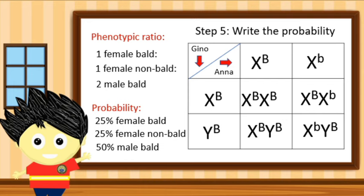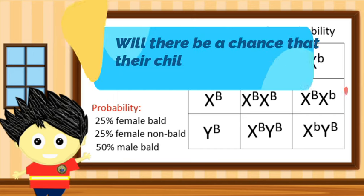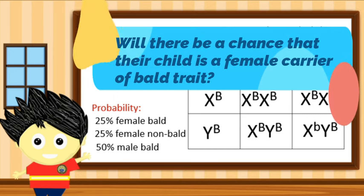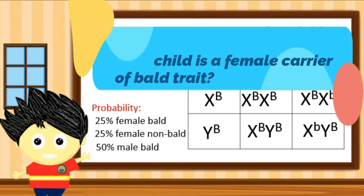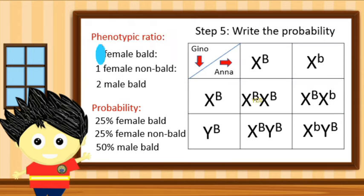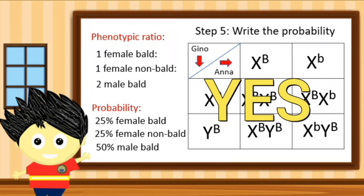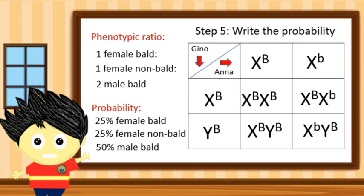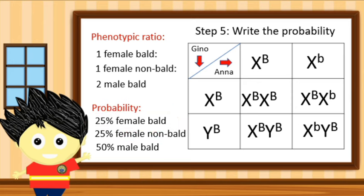Revisiting our genetic problem: the question asks whether it is possible for the child of Gino and Anna to be a female carrier of the non-bald trait. Our answer is yes. Based on the result of our Punnett Square, from the gametes of Gino and Anna, there is a 25% possibility that their child will be a female bald carrier.